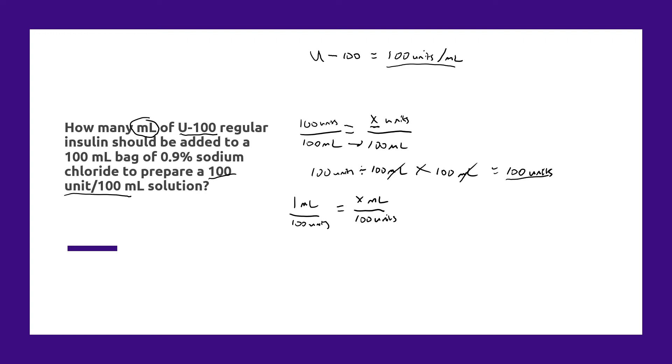And again, we would solve this math. So 1 milliliter divided by 100 units cross multiplied by 100 units equals 1 milliliter. So the answer to this question is 1 milliliter.